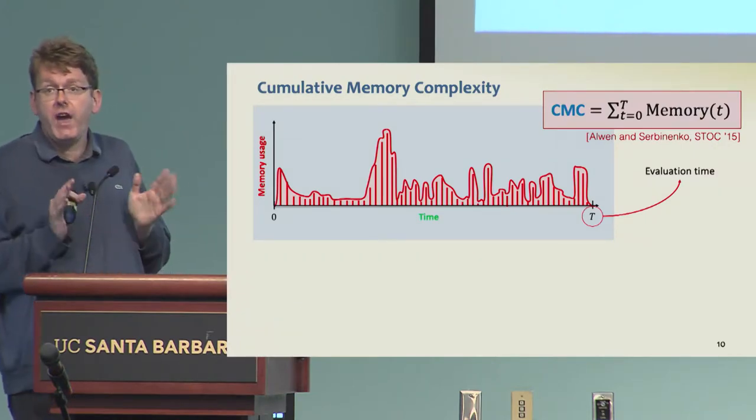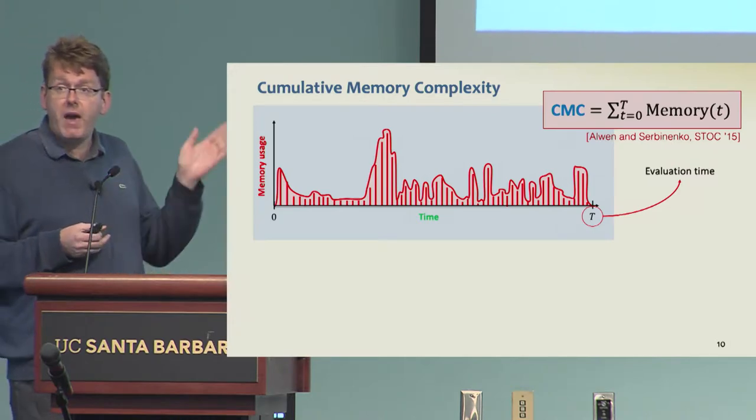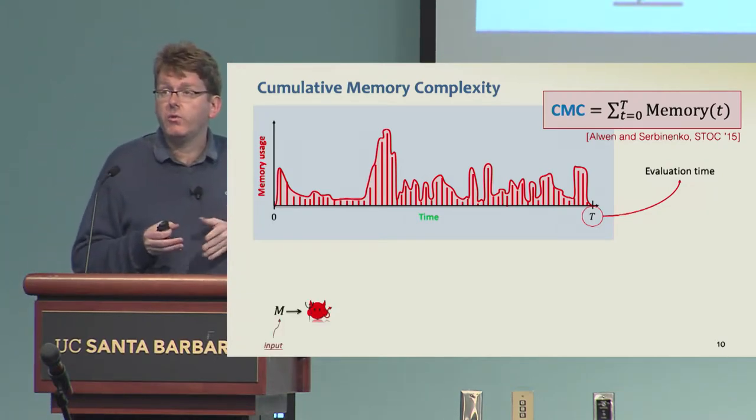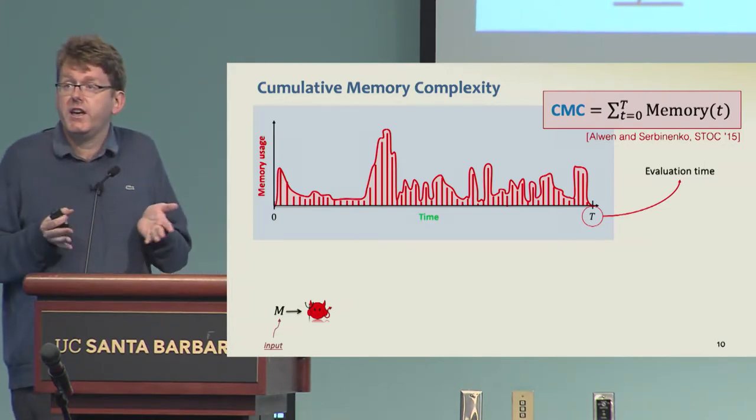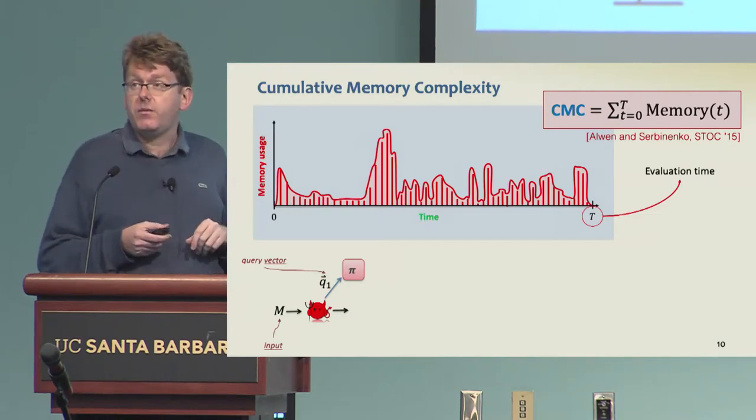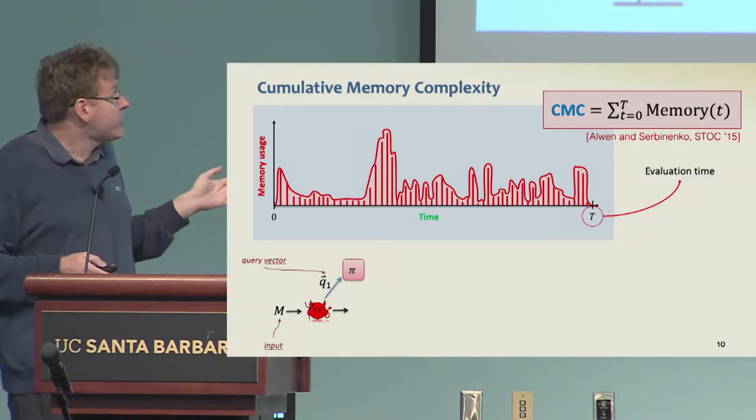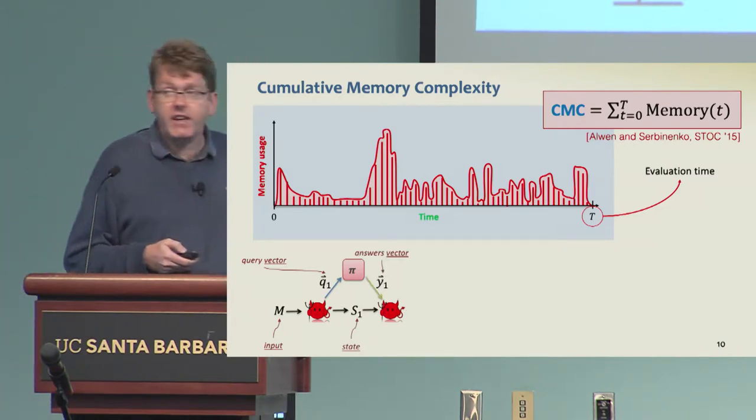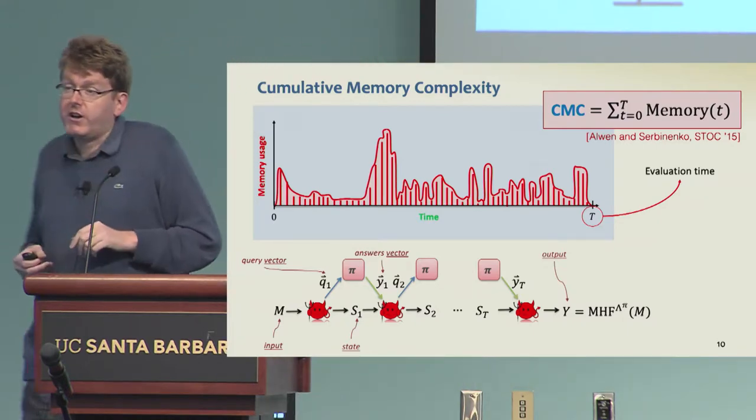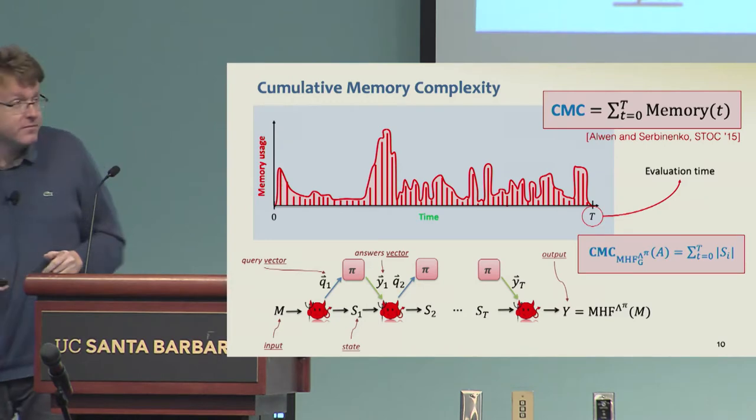A little bit more concretely, the way we will formalize memory hardness is by looking at the cumulative memory complexity, which was introduced by Alwen and Serbulenko, which looks at the memory usage at every point in time during the evaluation of the function, and then sums these memory usages up. We consider an adversary that will need to evaluate the function on an input M. Its execution proceeds in rounds. At every round, the adversary makes queries to the permutation, which we model as a random permutation. In particular, we make a vector of parallel queries, both forward and backward queries, and produce a state for the next step. The cumulative memory complexity of an execution is just the sum of the sizes of the states.